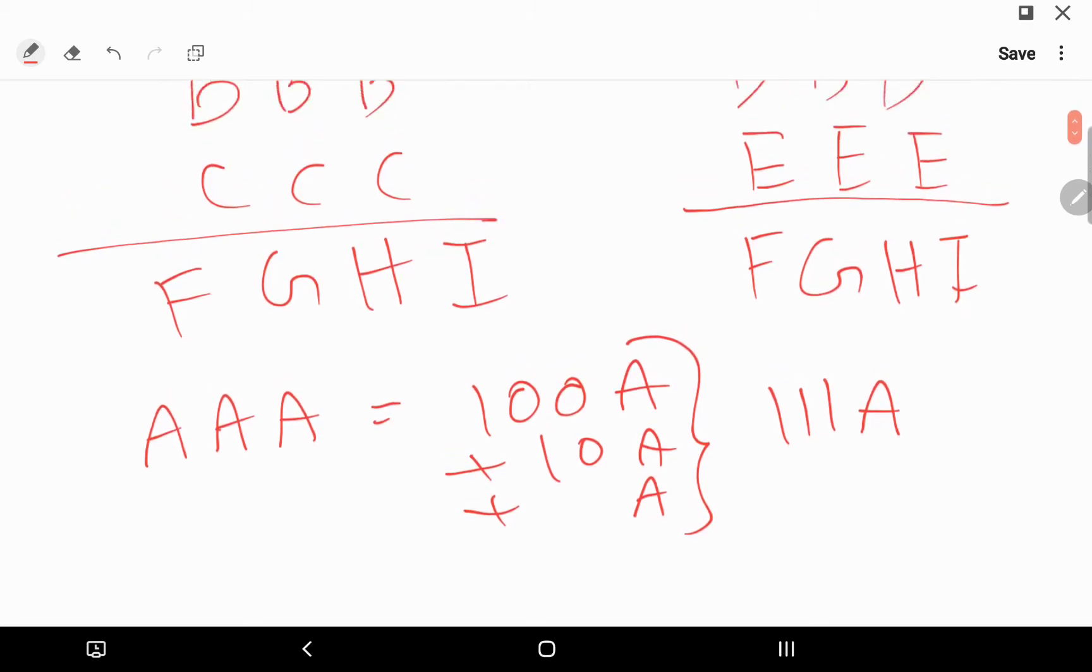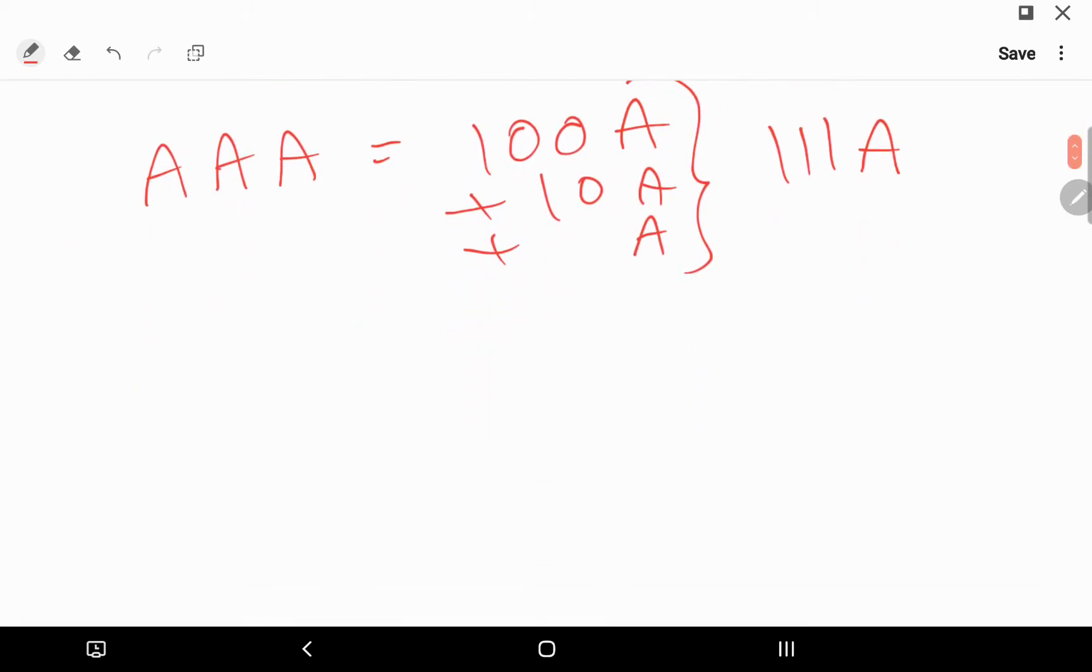So if I add 111A, 111B, and 111C, I will get 111 times (A plus B plus C) equals FGHI. So obviously FGHI will be divisible by 111.